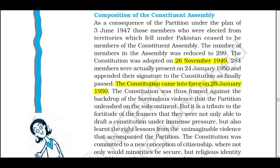Right now we are going to study the composition of the Constituent Assembly — what was the composition, what was the structure. In the previous video, we have already discussed that the Constituent Assembly took its first meeting on 9th of December 1946. But in 1947, there was the partition of India.